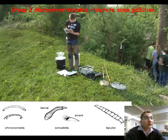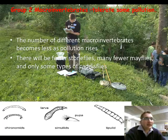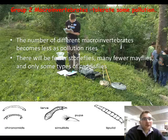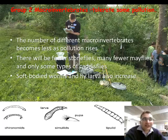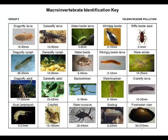Group 2 macroinvertebrates tolerate some pollution. The number of different macroinvertebrates becomes less as pollution rises, so there will be fewer stoneflies, fewer mayflies, and very few caddisflies as well. Soft-bodied worms and fly larvae tend to increase. Beetles are probably still in the stream, but mollusks we will probably not find if it's a moderately healthy stream.